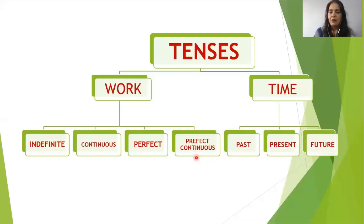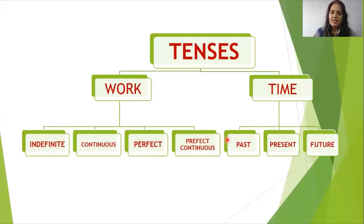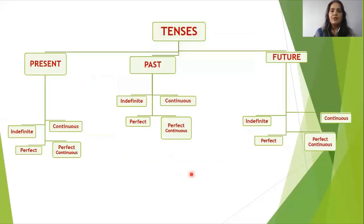The fourth one is perfect continuous. Continuous means in process, and perfect tells us the work has been started but it is still going on — the work is not finished. So these four categories are: indefinite — no particular state of work; continuous — work is going on, in process; perfect — finished, done, complete; and perfect continuous — the work had been started but is still going on.